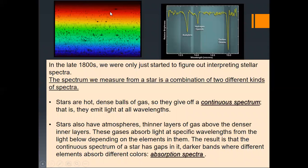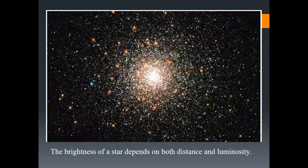If you look at the spectrum closely, do you see those black lines? Those are absorption spectra. By reading the spectrum, we can understand and recognize the elements in the star. The brightness of a star depends on both distance and its luminosity, so let's learn about luminosity in the next slides.